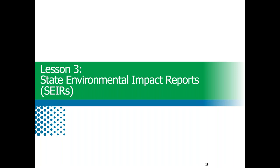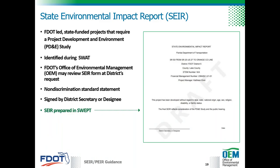Now we'll delve into the process of preparing State Environmental Impact Reports in Lesson 3. State funded FDOT PD&E studies are documented in a SEER. The SEER documents the social, economic, cultural, natural, and physical issues or resources evaluated as part of the project. Depending on the impact to environmental resources, SEERs may be prepared at the level of a Type 2 categorical exclusion, an environmental assessment, or an environmental impact statement. All SEERs are now prepared using a form in SWEPT.